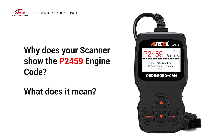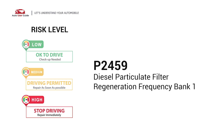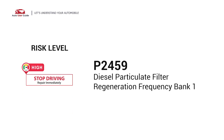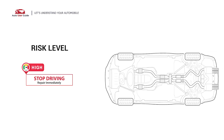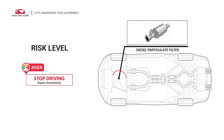Why does your scanner show the P2459 engine code? What does it mean? P2459 is a diagnostic trouble code for Diesel Particulate Filter Regeneration Frequency. It indicates that the PCM has detected that the regeneration frequency of the Diesel Particulate Filter is not conforming to a predefined and specified rate. Under this circumstance, stop driving and repair your vehicle immediately.